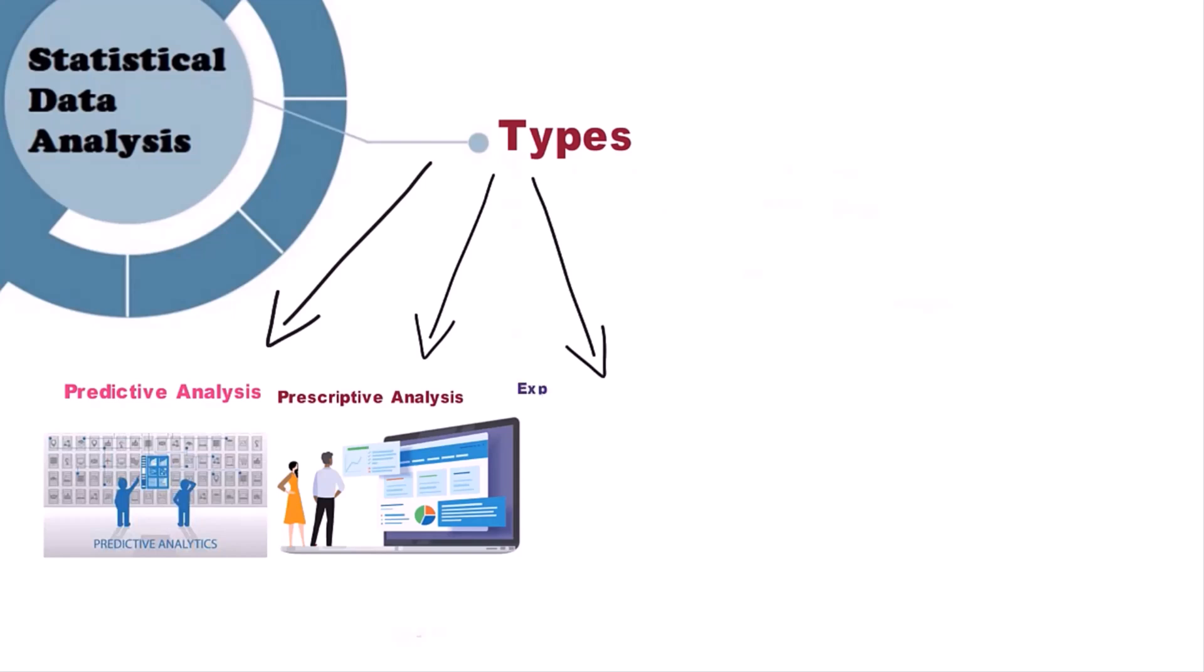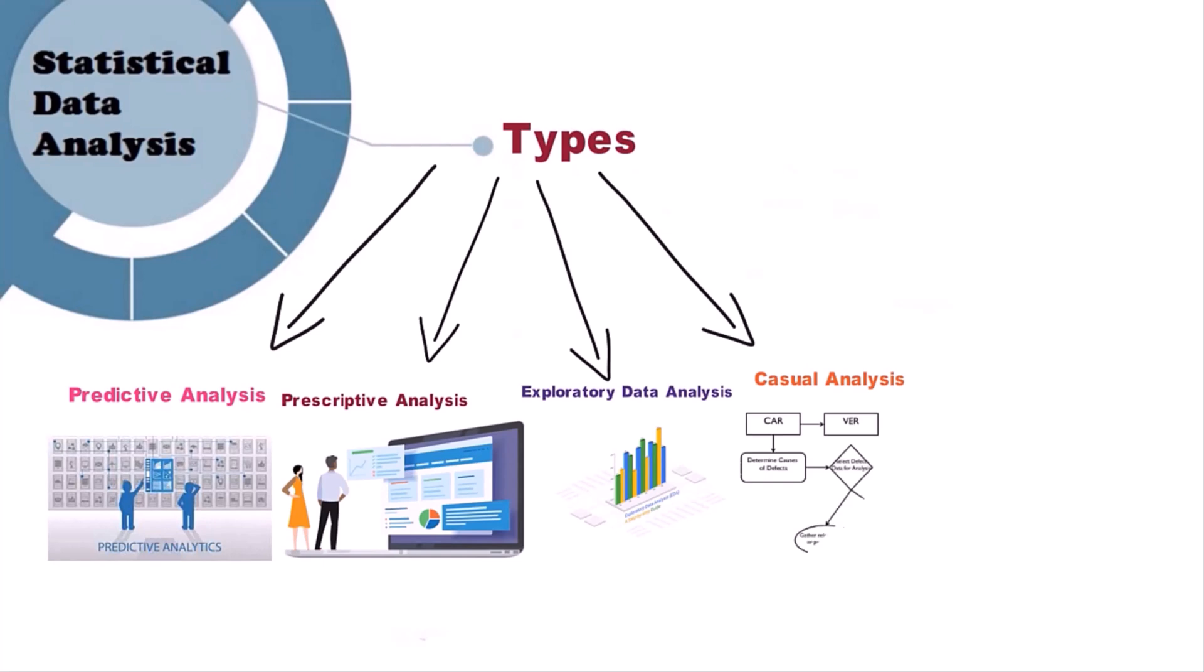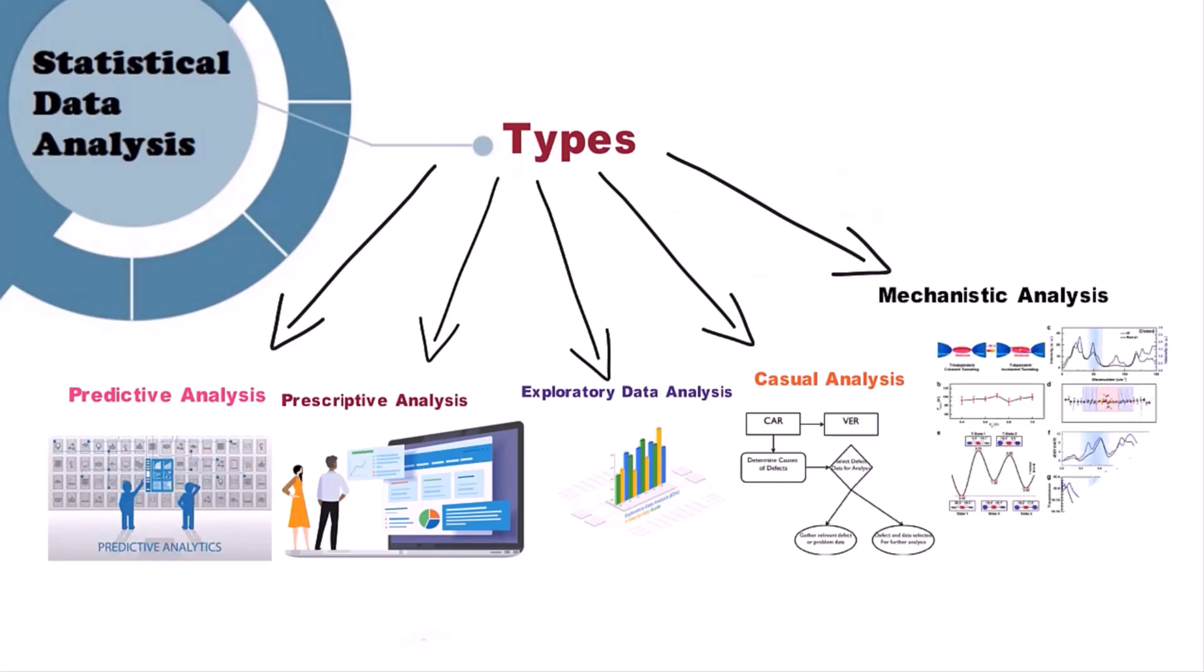Exploratory data analysis: previewing of data and assisting in getting key insights into it. Causal analysis: determining the reasons behind why things appear in a certain way. Mechanistic analysis: explaining how and why things happen rather than how they will take place subsequently.